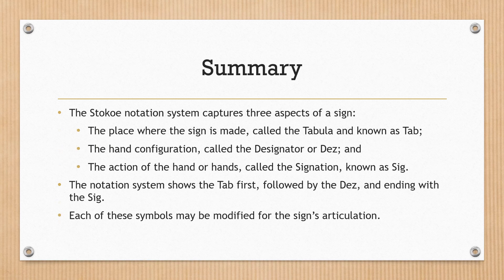Summary. The Stokoe notation system captures three aspects of a sign: the place where the sign is made, called the tabula and known as tab; the hand configuration, called the designator or DES; and the action of the hand or hands, called the signation, known as SIG. The notation system shows the tab first, followed by the DES, and ending with the SIG. Each of these symbols may be modified for the sign's articulation.